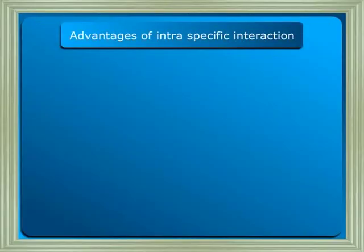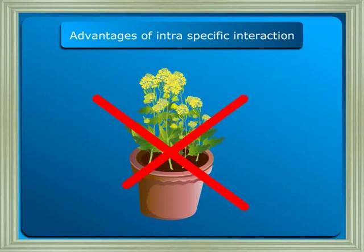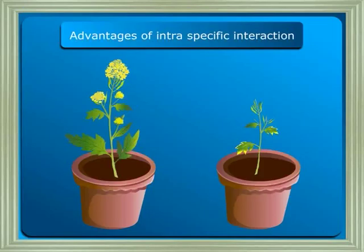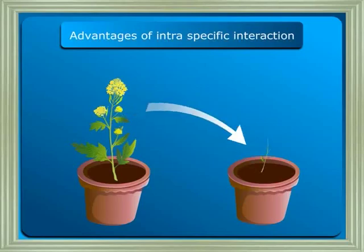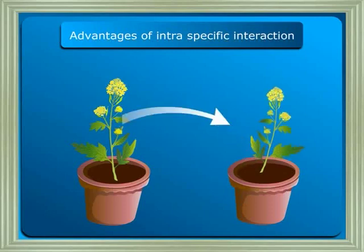Intraspecific interaction controls the size of the population of a given species. It allows selection of better and deserving members of the species to survive while the weaker ones are eliminated. The members selected in the competition pass on these characters to their offspring of the next generation. In the process of interaction, some species have developed the unique feature of division of labour.